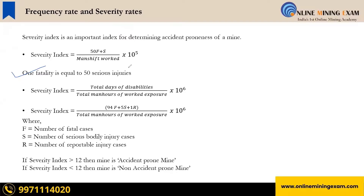One fatality is equal to 50 serious injuries — that is why the formula uses 50F. Empirically, one fatality equals 50 serious bodily injuries. The severity index also involves total man-hours of work exposure. There are two distinct terms: man-shift and man-hours. When it is man-shift, the multiplier is 10 to the power five; when it is man-hours, the multiplier is 10 to the power six.